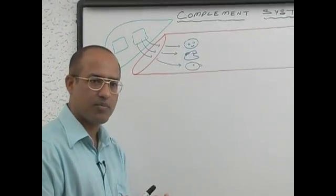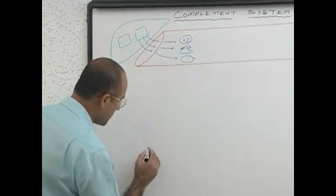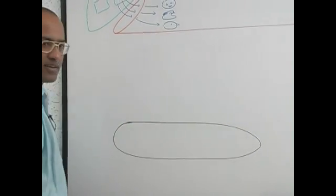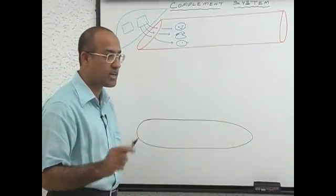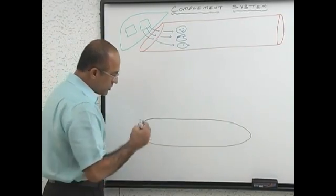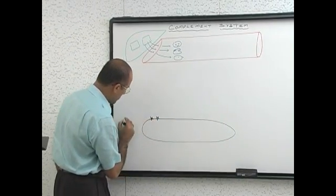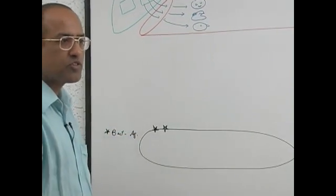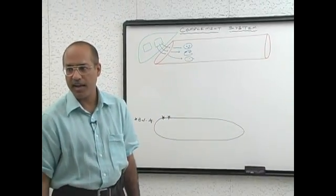Let us take a practical example: there is a bacteria — a bacillus — present in your tissue. This bacterium has antigens on its surface — these are bacterial antigens. When the immune system is activated, it makes antibodies against these bacterial antigens.